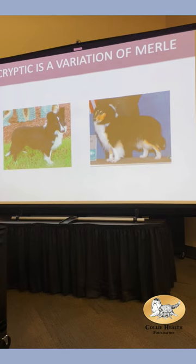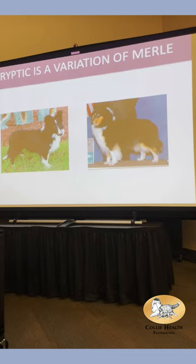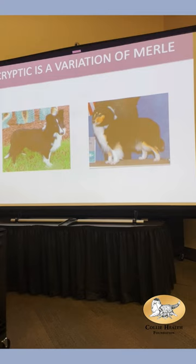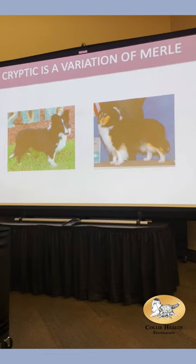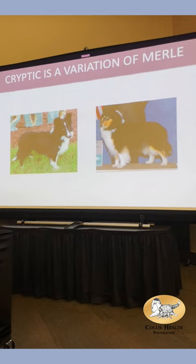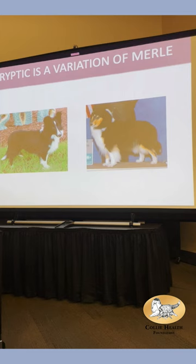The last variation of merle is cryptic merle. You name something cryptic because either a double merle produced a solid-colored dog, or two solid-colored dogs produced a merle — an unexpected merle. You realize one of your solids must actually carry the big M allele, but they don't show the merle pattern.